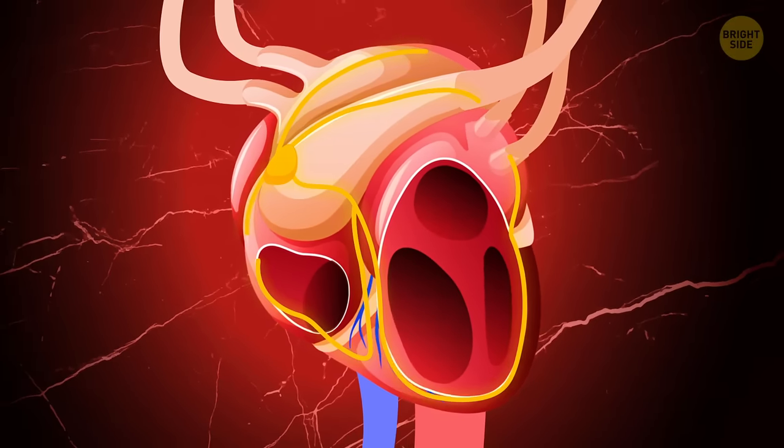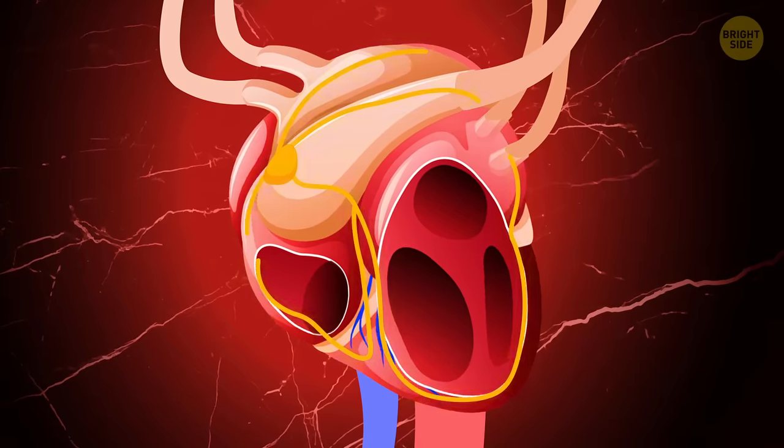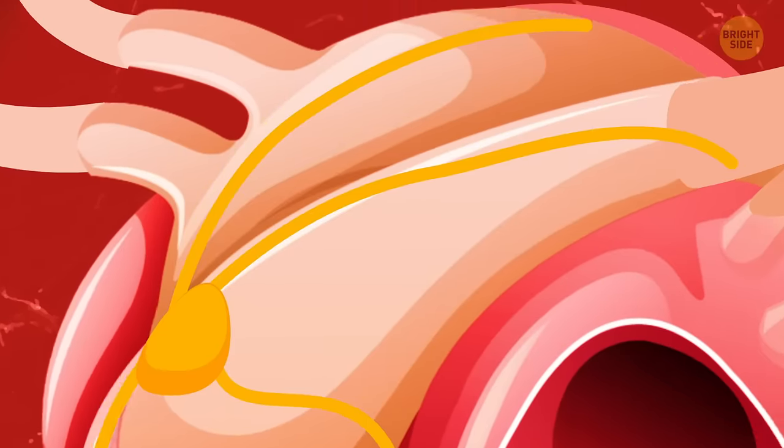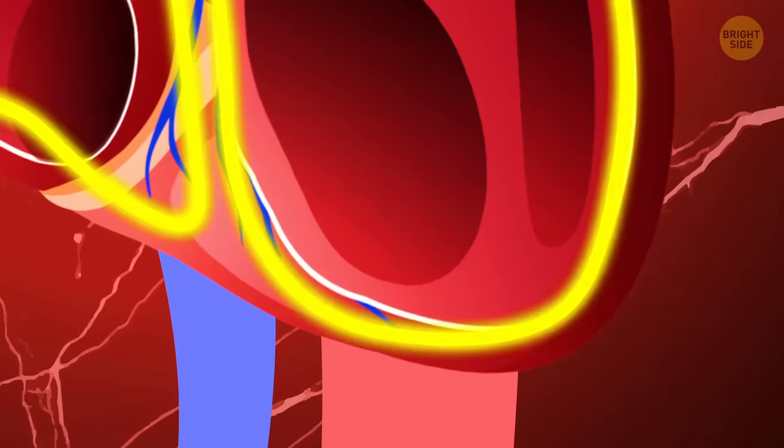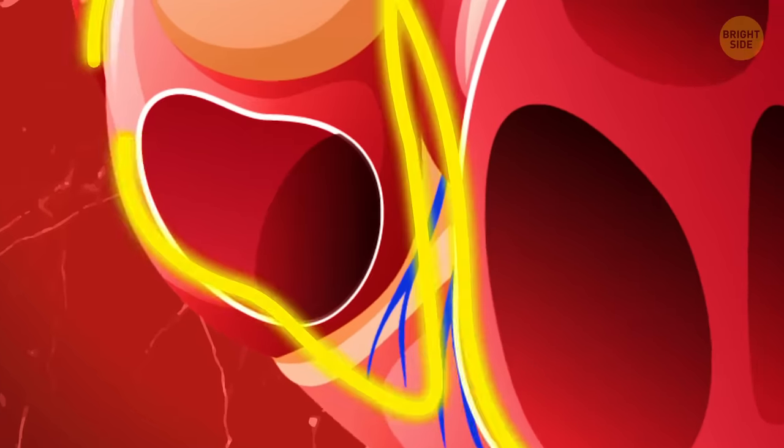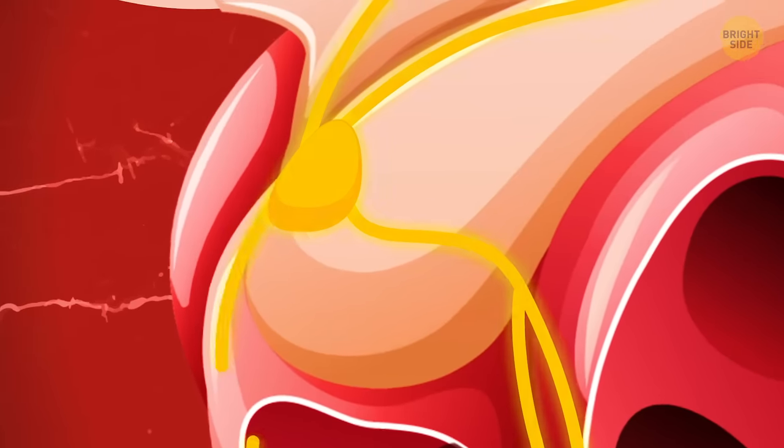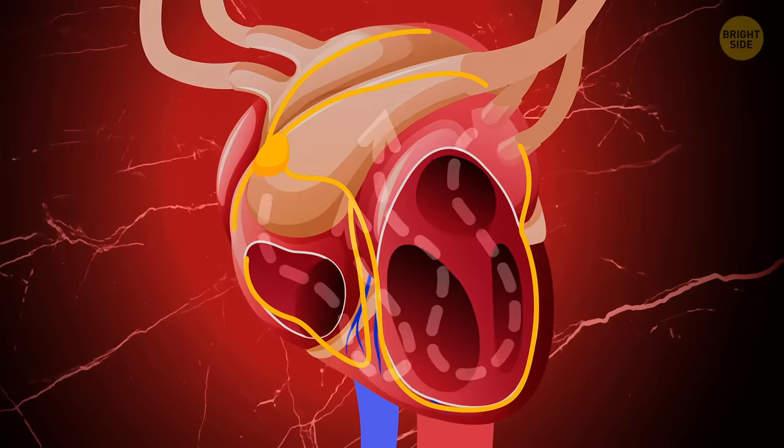This is where complex chemical reactions occur and create an electrical impulse. Unlike, say, your leg or arm muscles, all the muscle tissue in your heart is connected. So this electrical impulse strikes the whole heart. Any living tissue contracts thanks to the electricity, and the heart is no exception. It tightens like a fist, then relaxes.